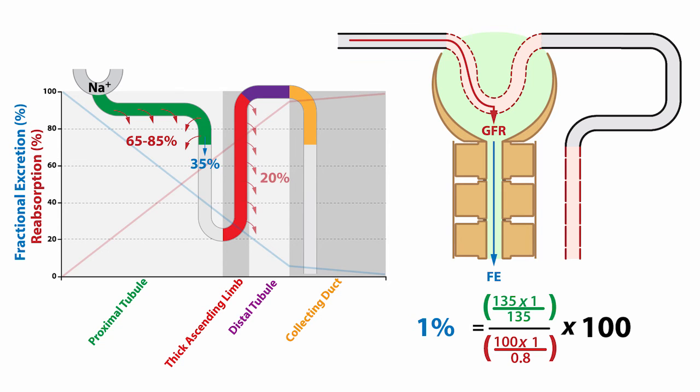However, we know that an additional 20% of the filtered sodium is reabsorbed along the thick ascending limb, which puts the reabsorption total at about 85% of the filtered sodium load and the fractional excretion at 15% as it leaves the thick ascending limb.